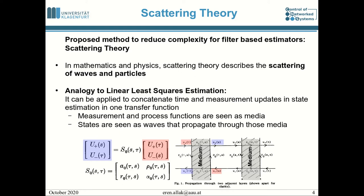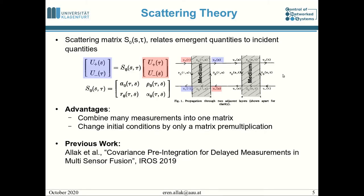Scattering theory can be applied to concatenate time and measurement updates in the form of media, where state estimates are just waves that travel through these media. By concatenating these media, transfer functions can be constructed and efficient computations can be done. We can combine many measurements — not only propagation measurements but also update measurements — into one single matrix. Additionally, we can change the initial conditions of a sensor fusion problem by just one simple matrix pre-multiplication.